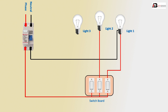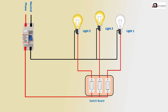The third switch outgoing connects to light three. Phase and neutral complete the connections. First switch on — light three on. Second switch on — light two on. Third switch on — light one on.